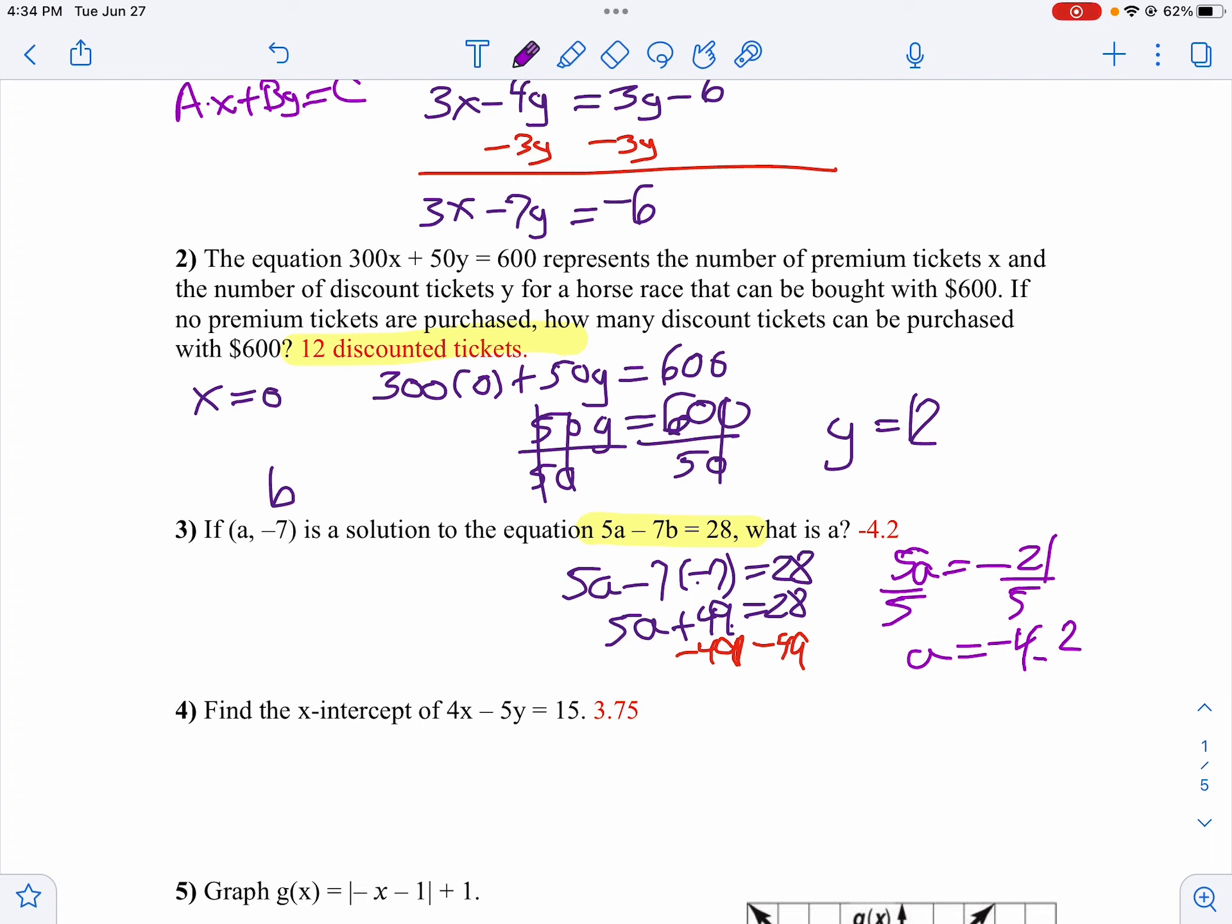When you're finding the x-intercept, that tells me y is 0. So if 4x minus 5 times 0 equals 15, so 4x minus 0 equals 15. So 4x equals 15. Divide both sides by 4. x is 3.75.